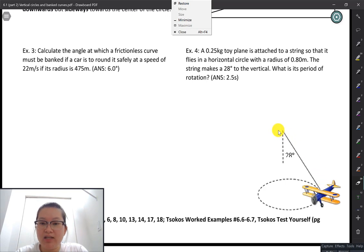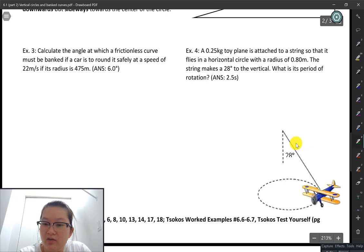The string makes 28 degrees to the vertical. So that is this line over here. Okay, so that's 28 degrees. It flies in a horizontal circle of radius 0.8 meters. So it is this radius right there. Okay, so what is the period of rotation?